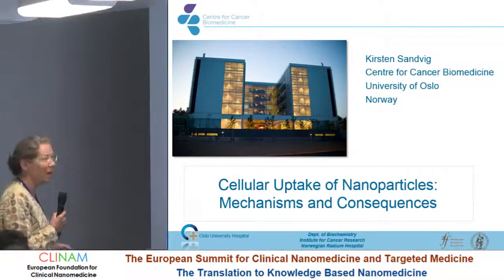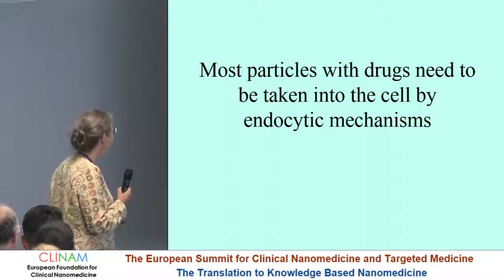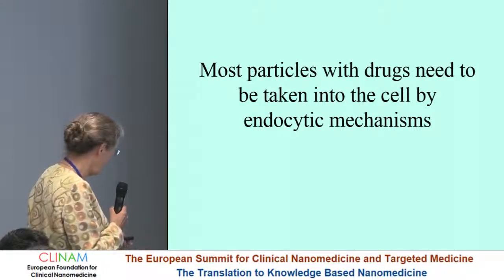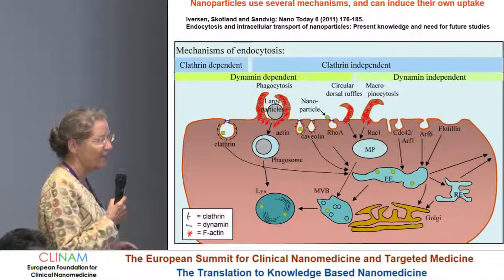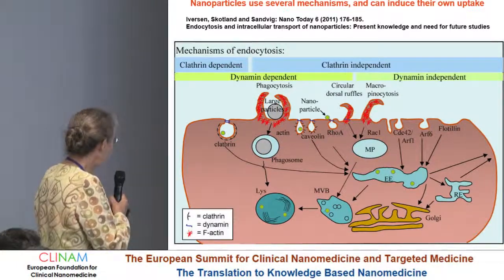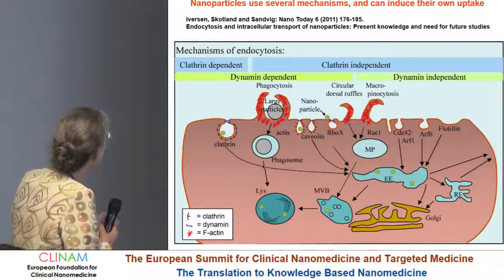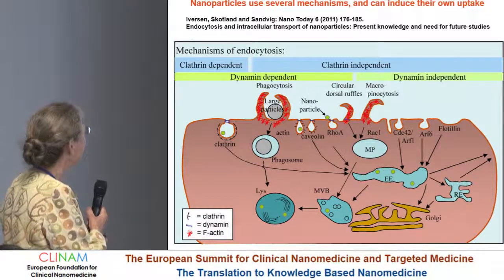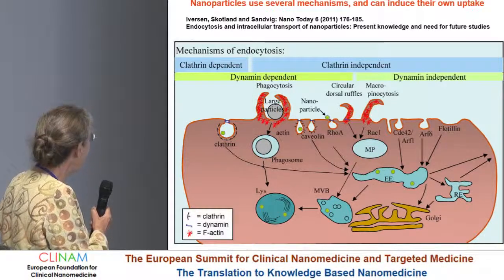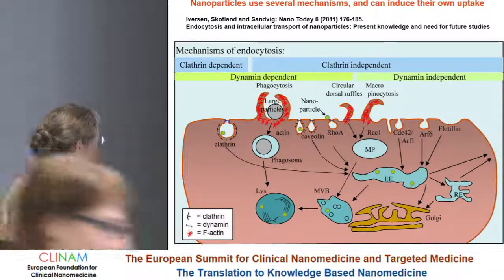I'm going to talk about uptake of nanoparticles, so you will see more endocytic pathways. Many particles with drugs need to be taken into cells by endocytic mechanisms in order to work in an optimal manner. You have already seen some of these pathways that can be used by nanoparticles to get into cells. Not only do they use several mechanisms, but they can also induce their own uptake if they become associated with the membrane. Often they end up in endosomes, but they can also go to different locations in the cell.